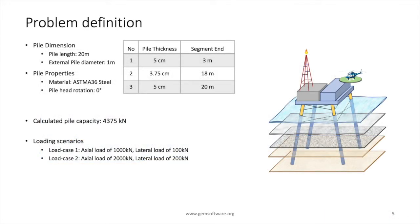In this video, we will perform axial load analysis and lateral load analysis of an offshore pile 20 meters in length, 1 meter in diameter. The pile is a hollow steel pile with three different segments, each having a different thickness as shown in the table. In Part 1 of the video, we had estimated the capacity of the pile to be 4,375 kN.